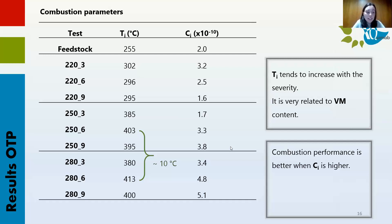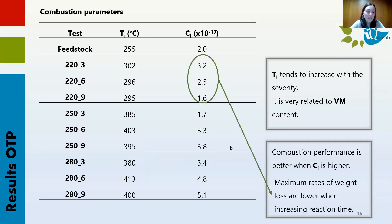Combustion index indicates that combustion performance is better if this index is higher. Paying attention to one reaction temperature, this index increases with reaction time, except for the reaction temperature of 220 degrees. The reason for this behavior is that combustion takes place over a longer time and the maximum mass loss rates are lower.